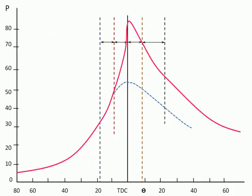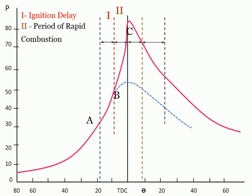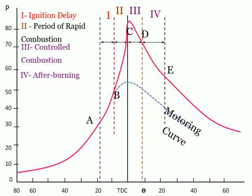Combustion in compression ignition engines takes place in four distinct stages: first, ignition delay period; second, rapid or uncontrolled combustion; third, controlled combustion; fourth, after burning.